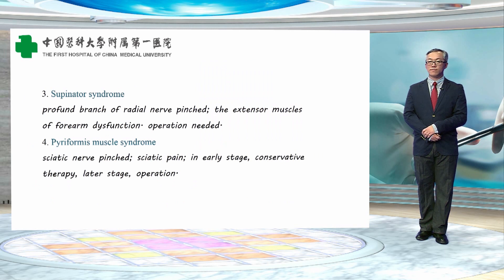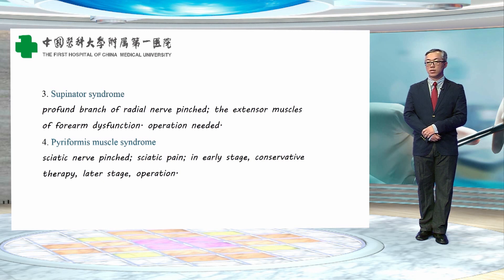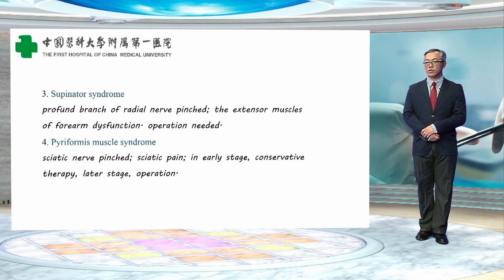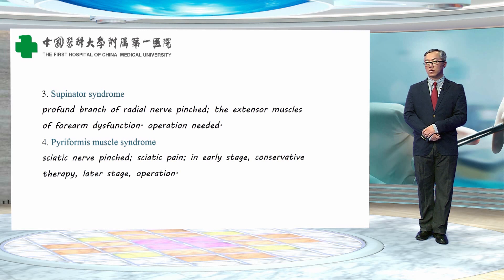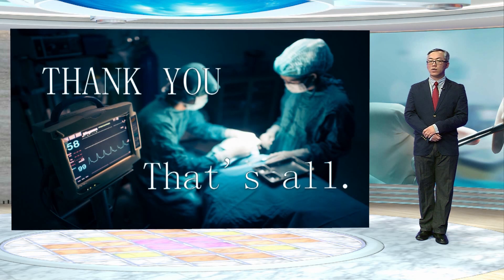The third is supinator syndrome, meaning the deep branch of the radial nerve is pinched and the extensor muscles of the forearm show dysfunction — often requiring operation. The fourth is piriformis muscle syndrome, where the sciatic nerve is pinched and the patient may feel sciatic pain. In early stage we can give conservative therapy, but for the later stage operation is needed.